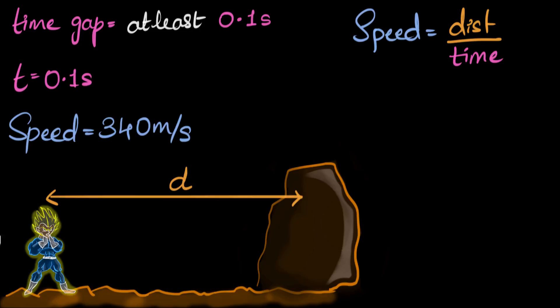All right, let's do this. So let's plug in. We know the speed of sound is 340 meters per second. So the speed of sound is 340 meters per second. That equals distance divided by time. We know time, let's put that first. The time is 0.1 second.